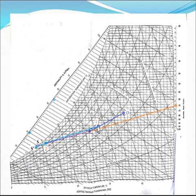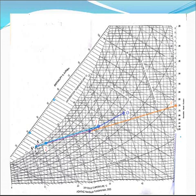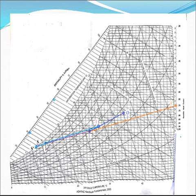At point 1, enthalpy is 53.3 kJ/kg, and at point 2, enthalpy is 30 kJ/kg. To determine the apparatus dew point temperature, we extend the line 1-2 up to the saturation curve. That extension cuts the saturation curve at S', and the temperature at S' is 8 degrees Celsius. So the apparatus dew point temperature is 8 degrees Celsius. The dry bulb temperature of air leaving the coil at point 2 is 11 degrees Celsius, and the dew point temperature of this air is 9.5 degrees Celsius.